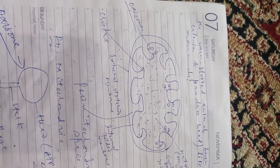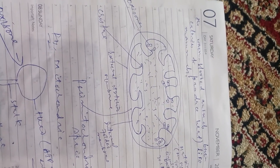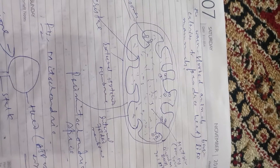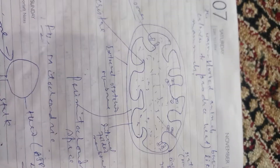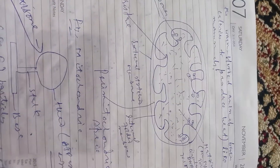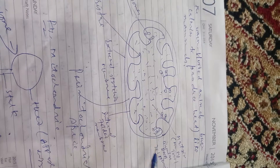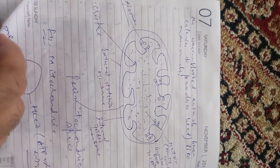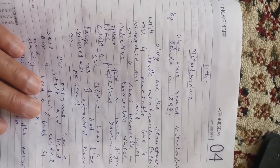Mitochondria is one of the cellular organelles and we have to talk about this organelle today. I am pointing my camera towards a figure of mitochondria, which is a cellular organelle in our cell — this is the rough sketch of mitochondria. Mitochondria was discovered by a scientist known as Benda, in 1897, who also named it.